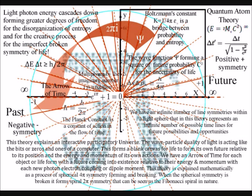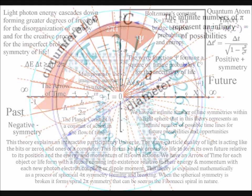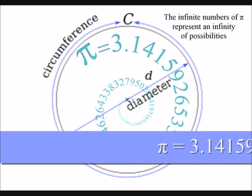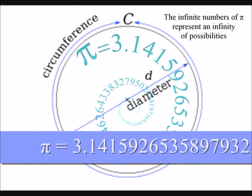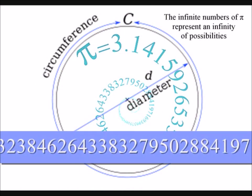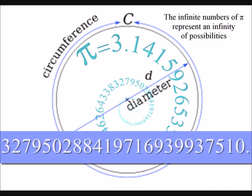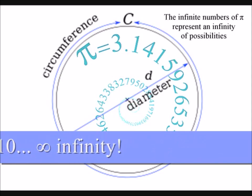When we consider something static, like the fixed ratio of a circle to its diameter, we find that the only possible way of analyzing the facts, so we can determine the fixed value of pi, is to express the relation in the form of an infinite series.